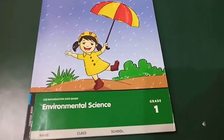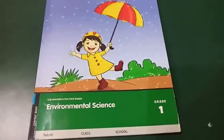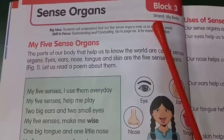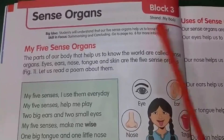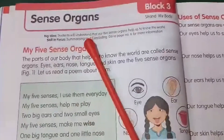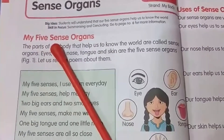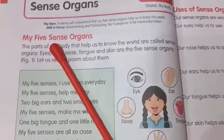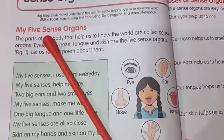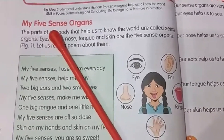For standard students, we will see Environmental Science Grade 1, Part 1. Block number 3: Sense Organs. In this lesson, we will identify five sense organs. We have five sense organs.